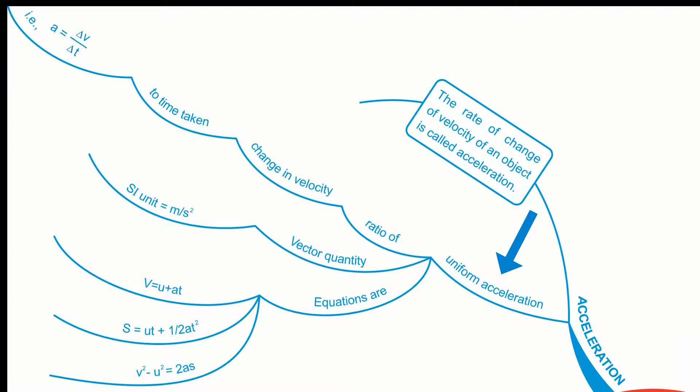...by Δt, where a denotes uniform acceleration. It is a vector quantity. SI unit = meter per second square.